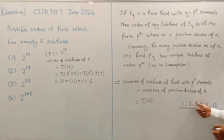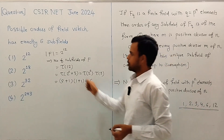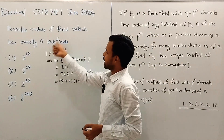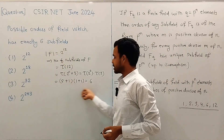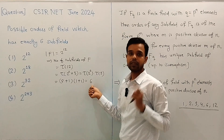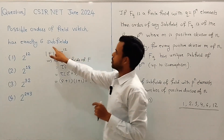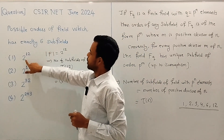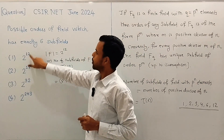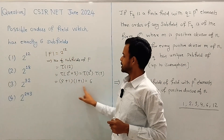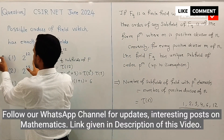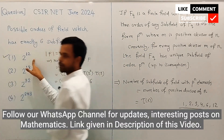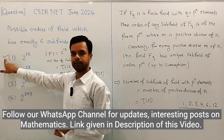So if a field has order 2^12 then it has exactly 6 subfields. Therefore option 1 is true, and we mark it as correct.